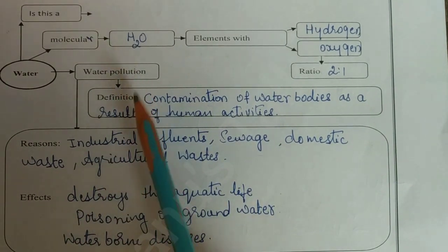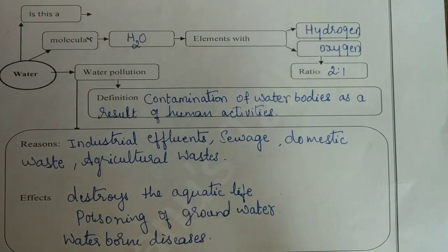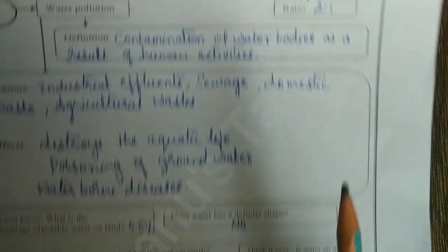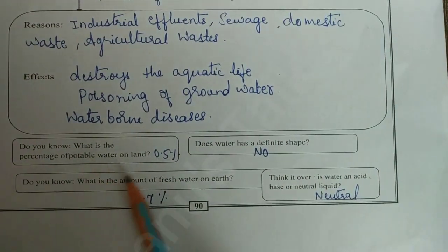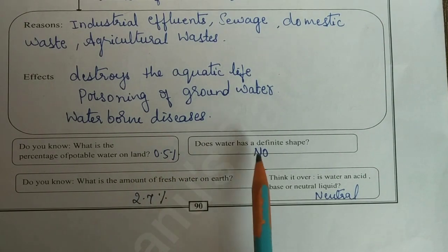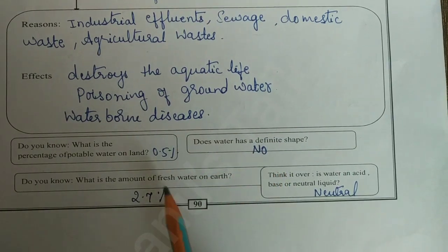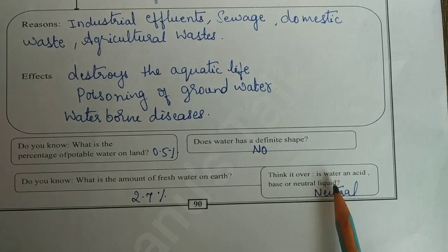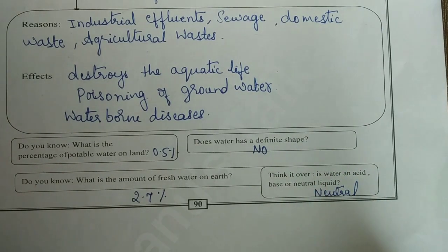The effects of water pollution: destroys the aquatic life, poisoning of groundwater, waterborne diseases. The percentage of potable water on land is 0.5%. Water does not have a definite shape. Amount of fresh water on the earth is 2.7%. Water is a neutral liquid.